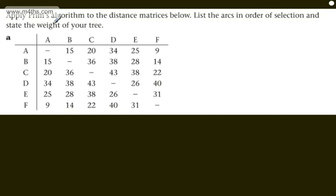In the question, we're asked to apply Prim's algorithm to the distance matrices below. This is an example of a distance matrix. It might represent the distance in kilometres between towns. So, town A to town B is 15 kilometres, A to C is 20 kilometres, A to D is 34 kilometres, and so on and so forth.